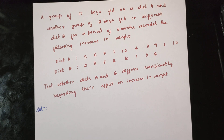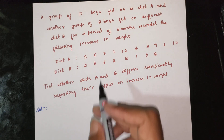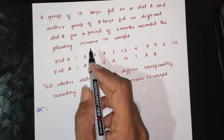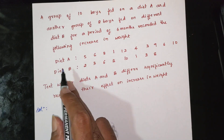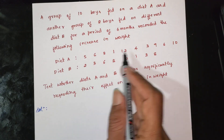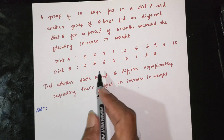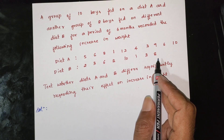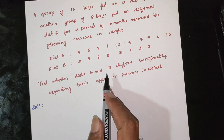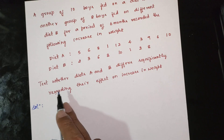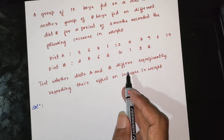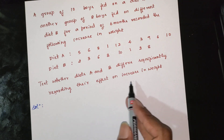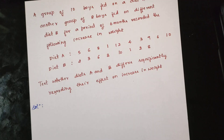Next question: a group of 10 boys fed on Diet A and another group of 8 boys fed on Diet B for a period of 6 months. The following increases in weight were recorded. Test whether Diet A and Diet B differ significantly regarding the increase in weight.